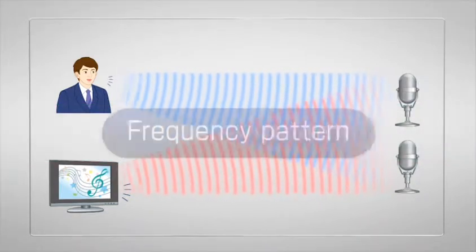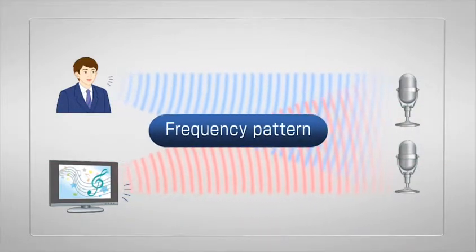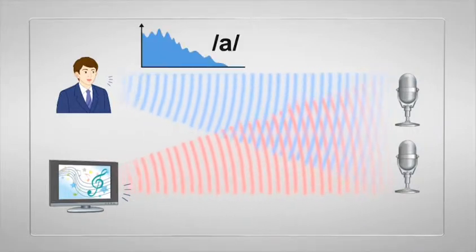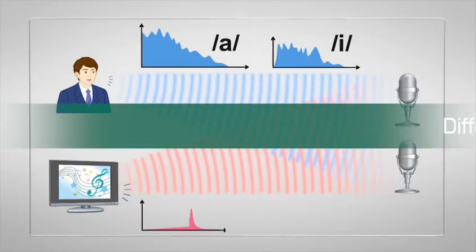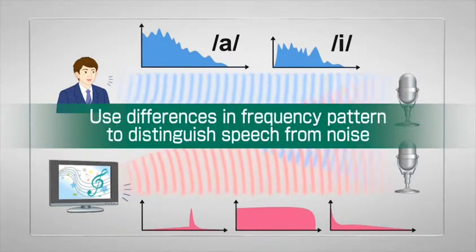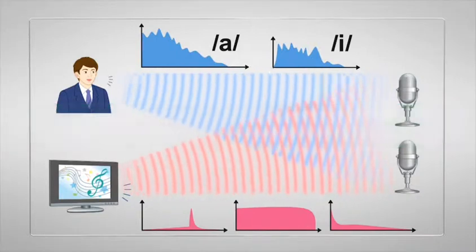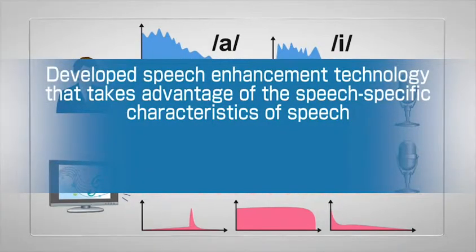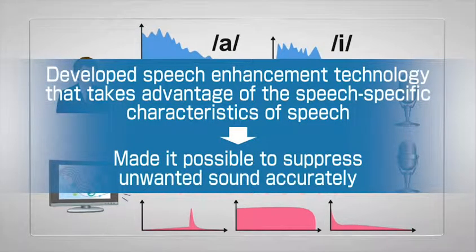The second characteristic of speech is its unique frequency pattern. The frequency pattern of speech is quite different from noise generated by non-human objects. This difference can be used to clearly distinguish speech from noise. NTT Communications Science Laboratories have developed speech enhancement technology that takes advantage of these speech-specific characteristics, making it possible to suppress unwanted sound more accurately.